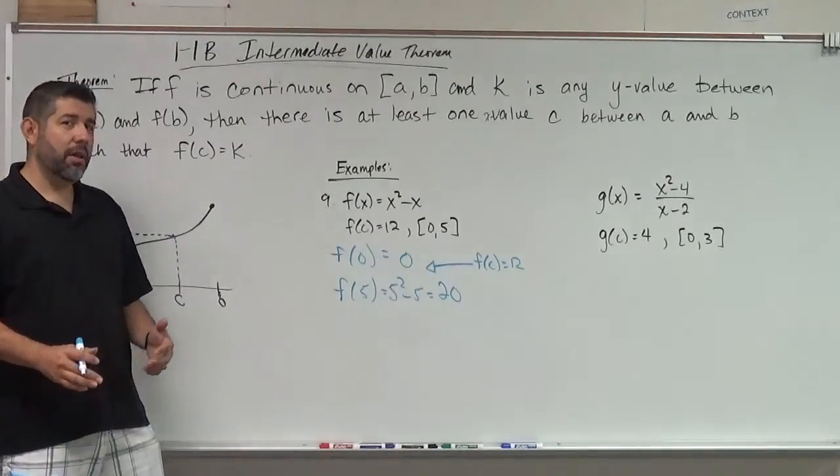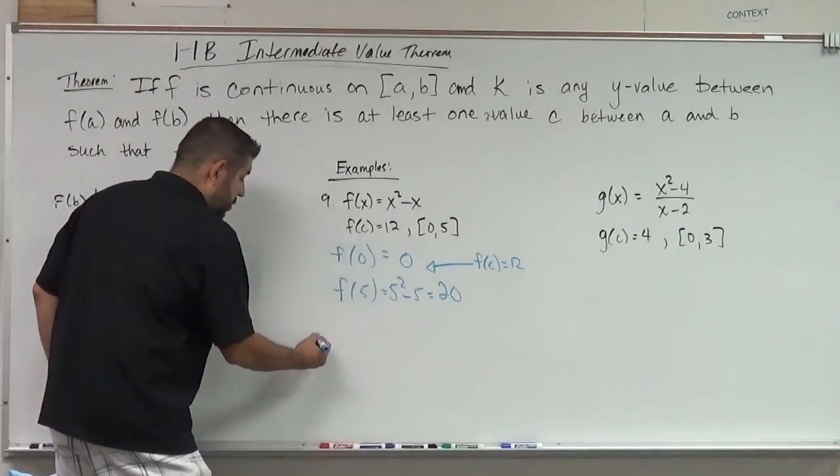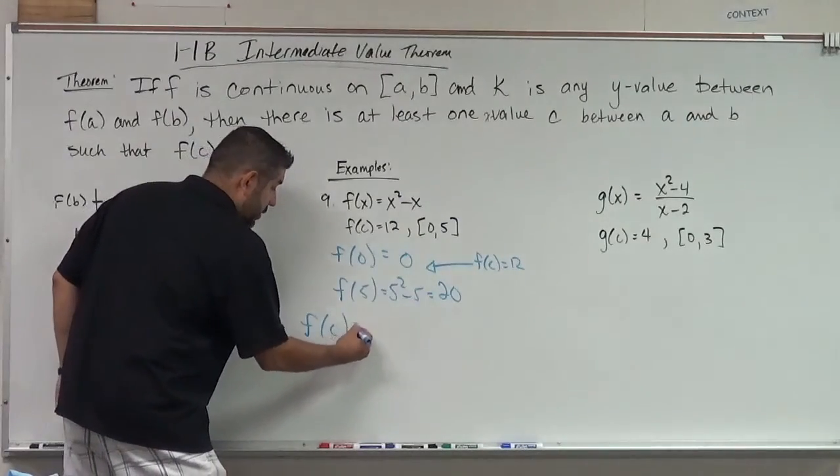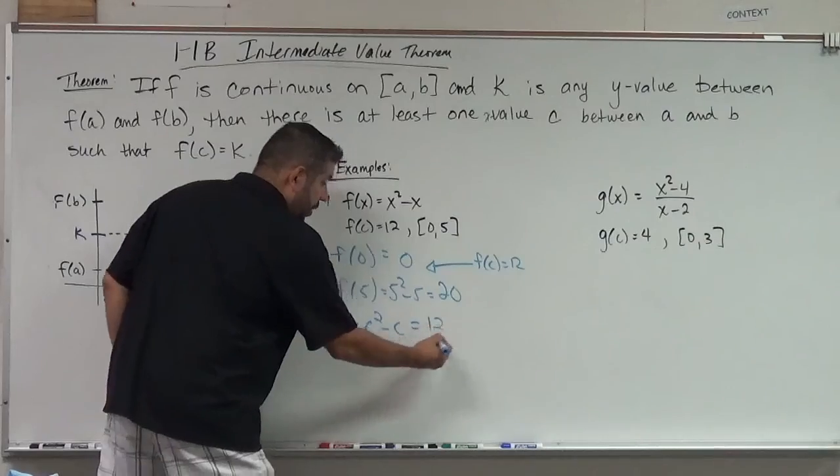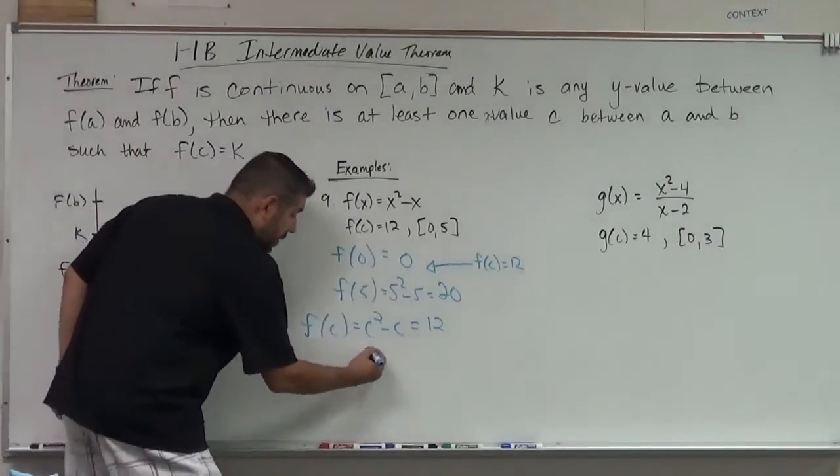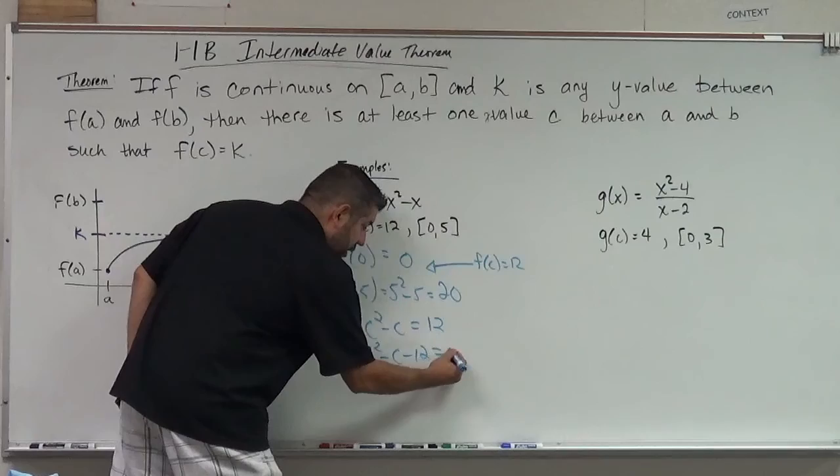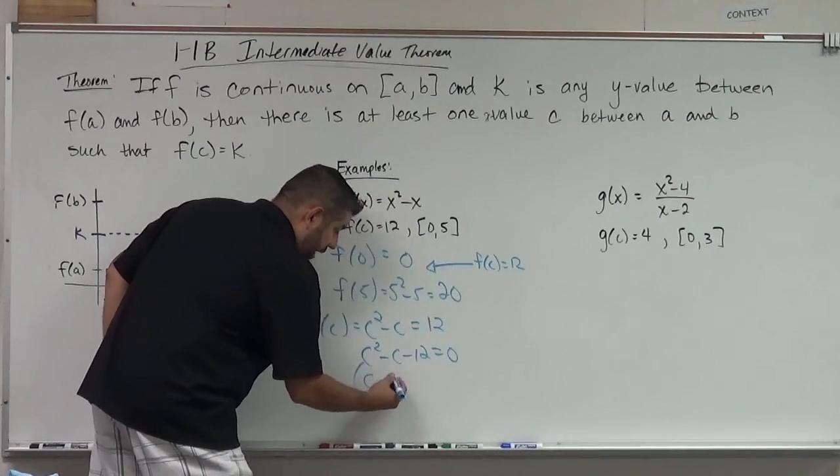So now, let's find c. So what we're going to do is, we're going to plug c in, so c squared minus c, and we're going to set that equal to 12. And then we're going to solve this. So c squared minus c minus 12 equals 0. We're going to go ahead and factor that.